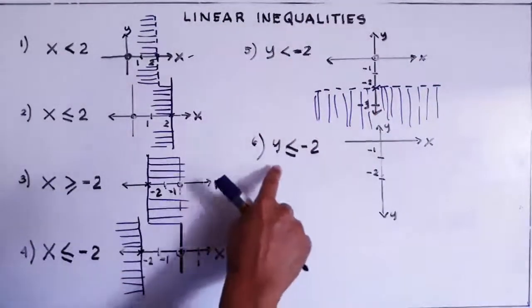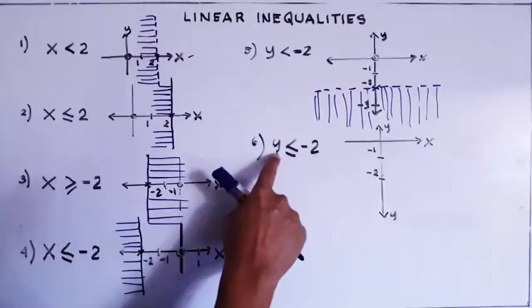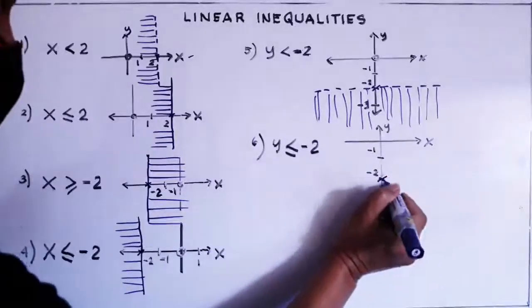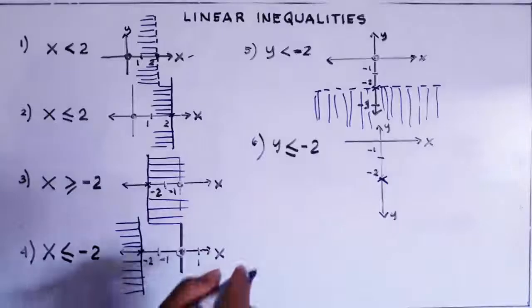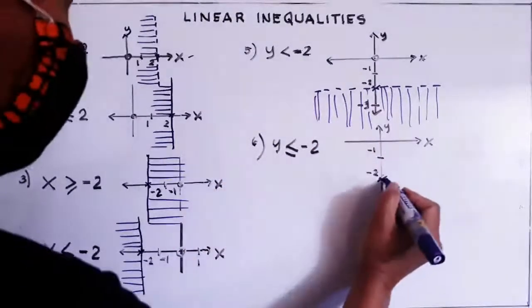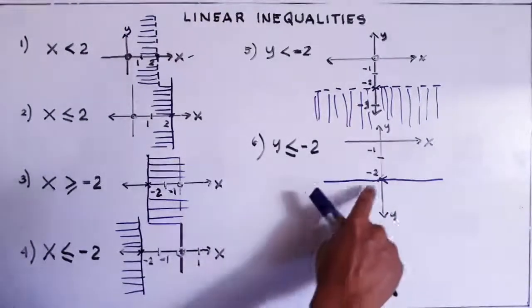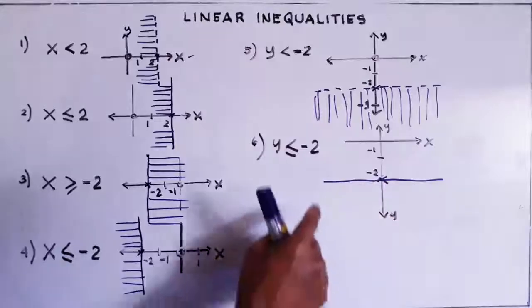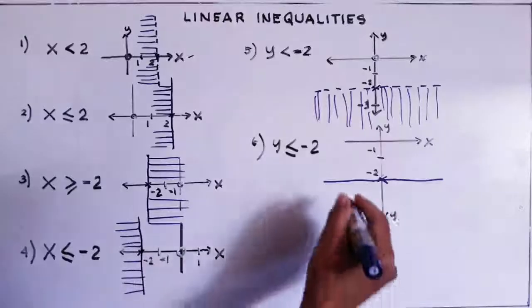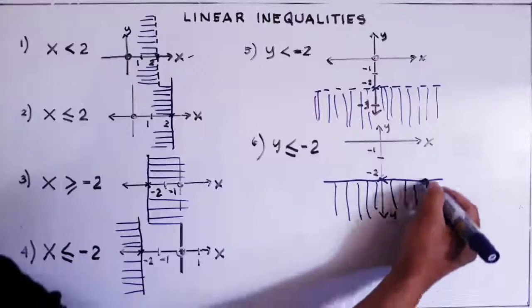Number six. We have y less than or equal to negative two. We locate negative two on the y-axis. We draw a line — it has an equal sign, so it's visible. We draw a visible solid horizontal line at negative two, meaning negative two is included. Then we shade — less than means it's still going down. The value negative two is included in our values.